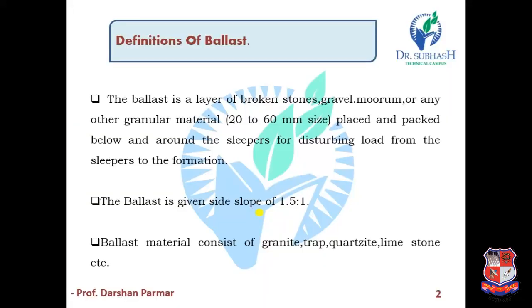Definition of ballast — what is ballast? Ballast is a layer of broken stones, gravel, muram, or any other granular material up to 20 to 60 mm in size, placed and packed below and around the sleepers for distributing load from the sleepers to the formation. Ballast is given a side slope of 1.5 to 1, and ballast material consists of granite, trap, quartzite, limestone, etc.